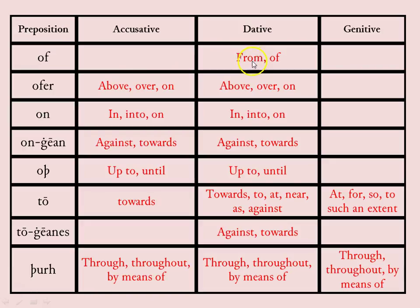'Of' — dative only — meaning 'from,' 'of.' 'Ofer' — meaning 'above,' 'over,' 'on' — same for accusative and dative. 'On' — meaning 'in,' 'into,' 'on' — both accusative and dative the same. 'Ond' — meaning 'against,' 'towards' — same for the dative. 'Op' — meaning 'up to,' 'until' — same for the dative. 'Tol' — in the accusative meaning 'towards'; in the dative meaning 'towards,' 'to,' 'at,' 'near,' 'as,' 'against'; and in the genitive meaning 'at,' 'for,' 'so,' 'to such an extent.'